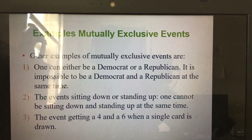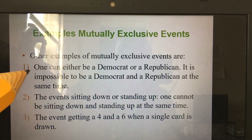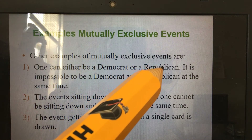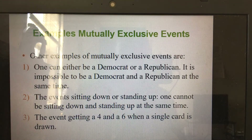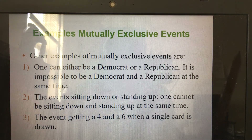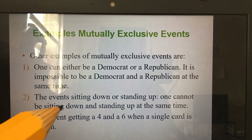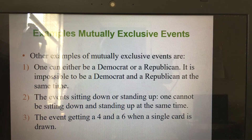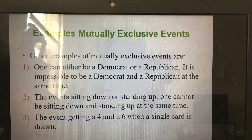Let me give you more examples of mutually exclusive events. First: one can either be a Democrat or a Republican — it is not possible to be both at the same time, so those two events are mutually exclusive. Another example: the events 'sitting down' and 'standing up' — you can't be sitting down and standing up at the same time, so those events are also mutually exclusive.